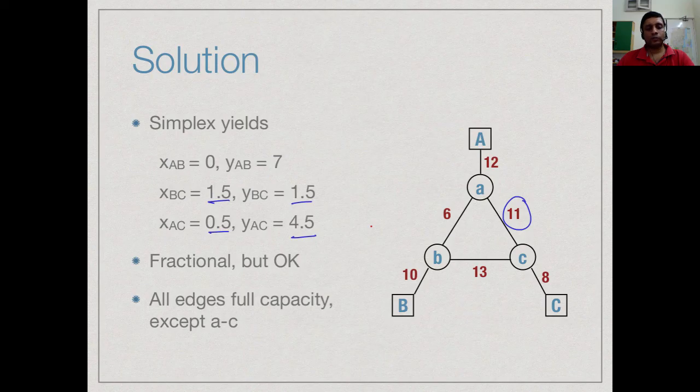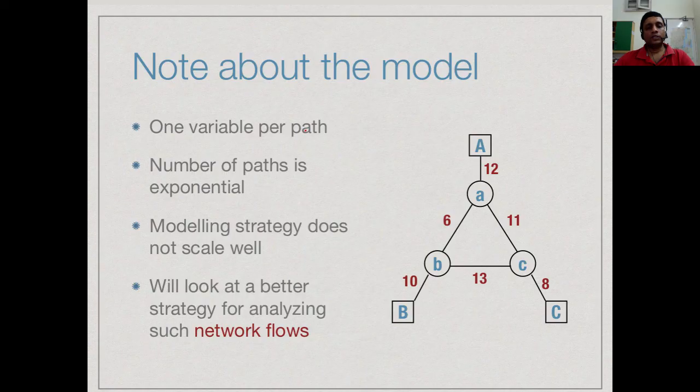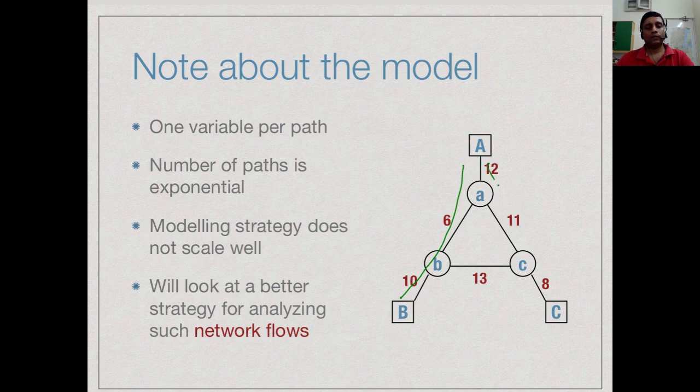That is not a problem. There is however, another problem, which is the way we have actually set up the linear program. The way we have set up the linear program is to take each possible way of routing the traffic. We have A to B, we have a link, we have A to B like this, we have another path.